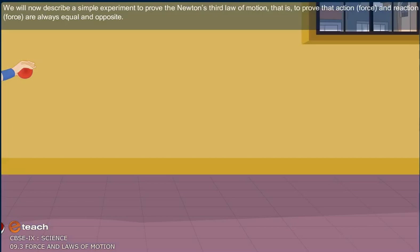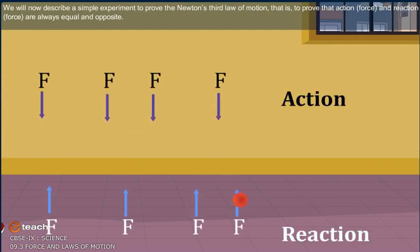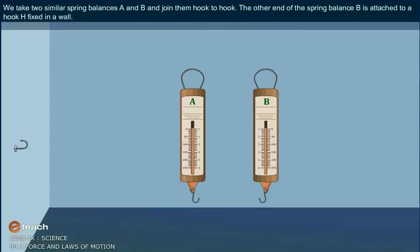We will now describe a simple experiment to prove Newton's third law of motion, that is, to prove that action force and reaction force are always equal and opposite. We take two similar spring balances A and B and join them hook to hook.